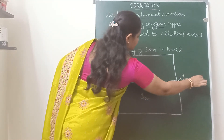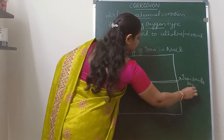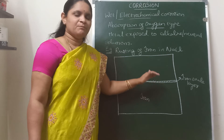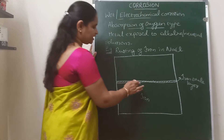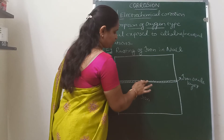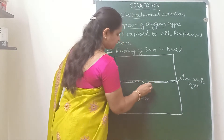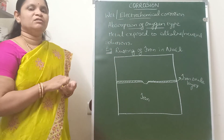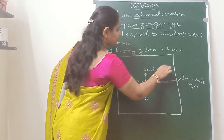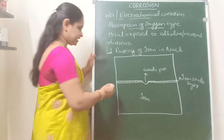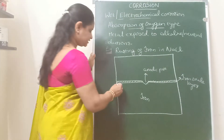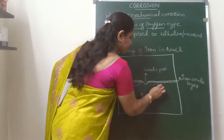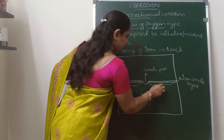In Engineering Chemistry, we have started the chapter on corrosion. In our previous classes, we discussed the different types of corrosion — dry corrosion or chemical corrosion, and wet or electrochemical corrosion. Wet or electrochemical corrosion will take place in presence of a liquid medium.